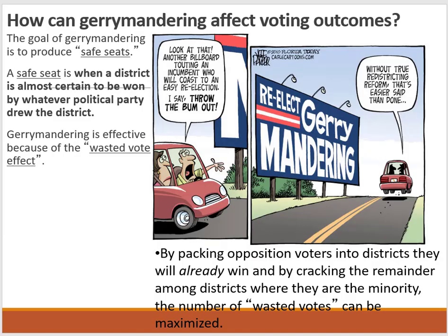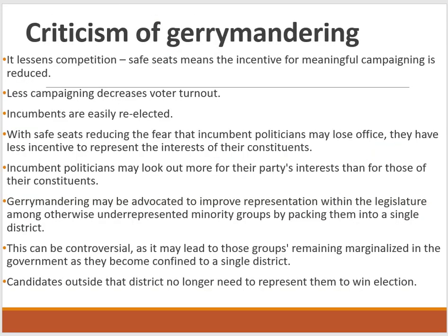The goal of gerrymandering is to produce safe seats — where a district is almost certain to be won by whatever political party drew it. Gerrymandering is effective because of the wasted vote effect. If you're voting in a district where the majority is, for example, conservative, your liberal or Democratic vote isn't going to have a big effect on the outcome. By packing opposition voters into a district, the winners have basically already been decided and wasted votes are maximized.